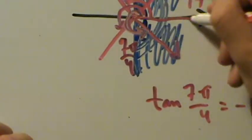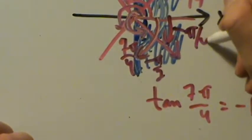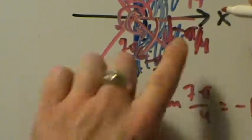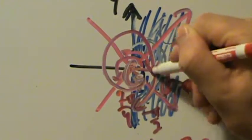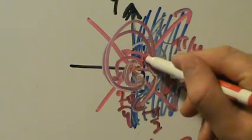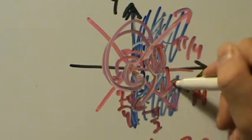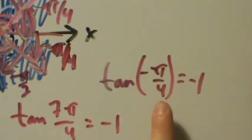Since we have 7 pi over 4, we can subtract 2 pi: 7 pi over 4 minus 2 pi gives us negative pi over 4. Alternatively, if positive pi over 4 is in one direction, going the same distance in the negative direction gives negative pi over 4. So negative pi over 4 is our answer, because tangent of negative pi over 4 is negative 1, and negative pi over 4 is inside the interval.